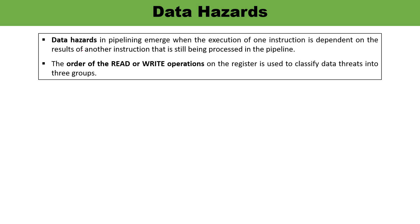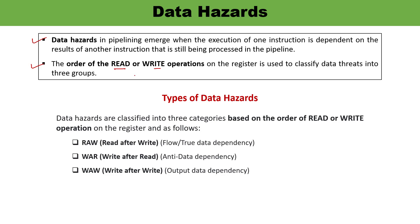Coming to data hazard. During execution, instructions are fetched, decoded, and executed one by one. When one instruction is dependent upon another instruction already being processed, that is the situation of data hazard. The order of read or write operations on registers is used to classify different kinds of data hazards. There are three types: Read After Write (also known as flow-through data dependency), Write After Read (anti-data dependency), and Write After Write (output data dependency).